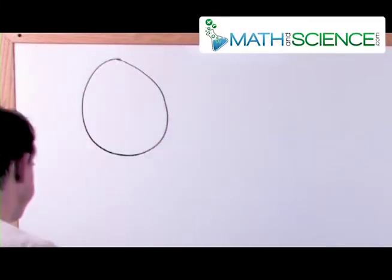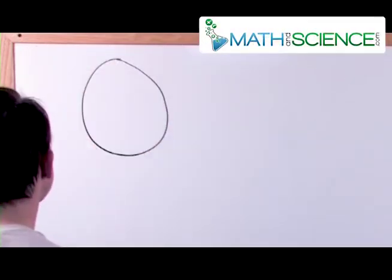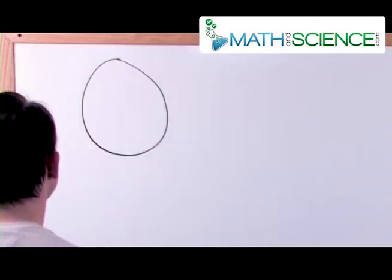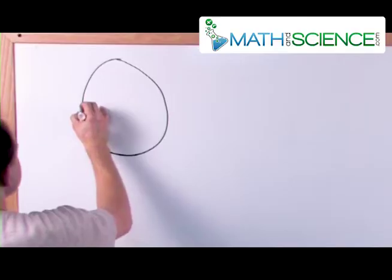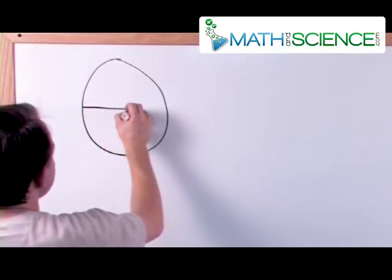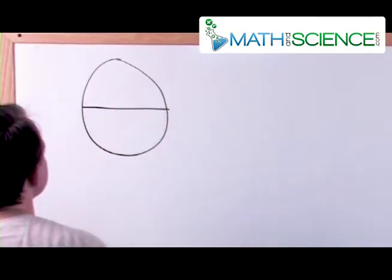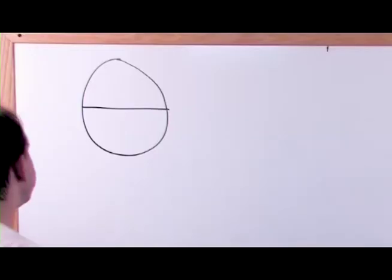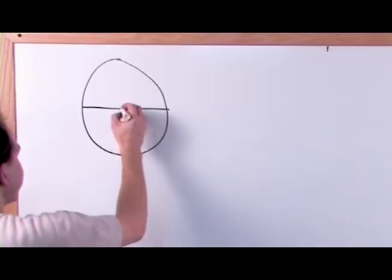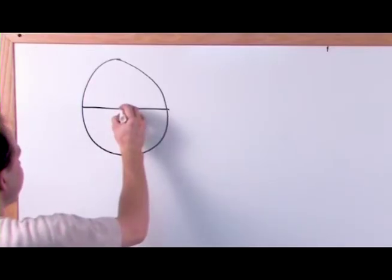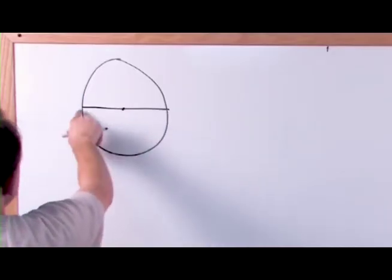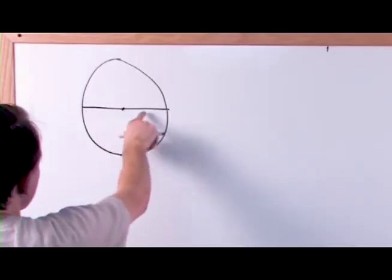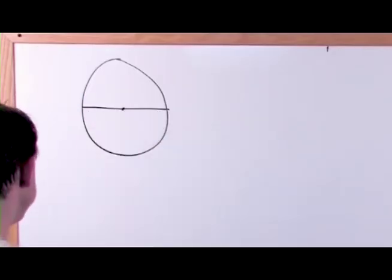So there's a circle. Here's a line that goes all the way through the center of the circle. It goes through the very center point of the circle and it goes all the way from one side to the other.